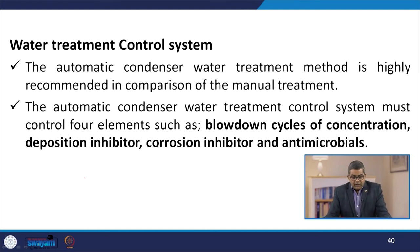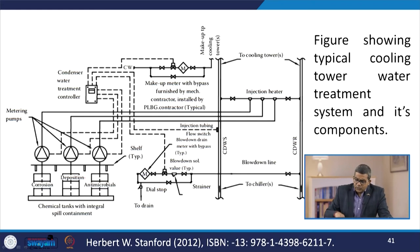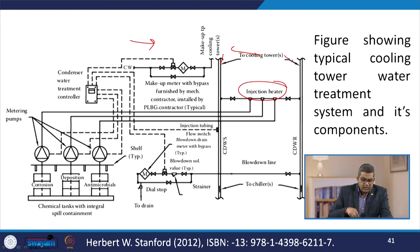Water treatment is a very crucial aspect. Let us discuss the water treatment control system. The automatic condenser water treatment method is highly recommended in comparison to manual treatment. The automatic condenser water treatment control system must control four elements: blowdown cycle of concentration, deposition inhibitors, corrosion inhibitors, and antimicrobials. A typical cooling tower water treatment system and its components include cooling tower lines and injection feeders among various components enlisted for the treatment of cooling water.